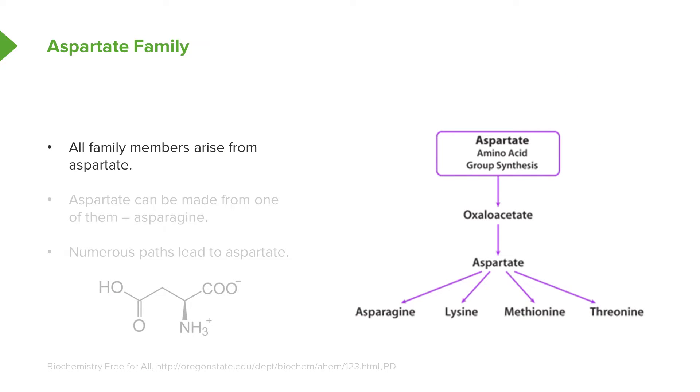All family members in this metabolic pathway come from aspartate. Aspartate can actually also be made from one of them, so there's a reverse reaction that can produce aspartate as we will see. There are numerous ways that lead to aspartate, so I'm only going to talk about a couple of them.